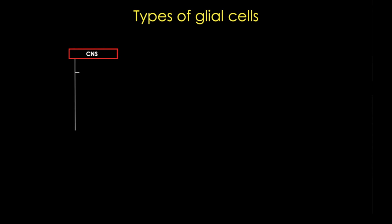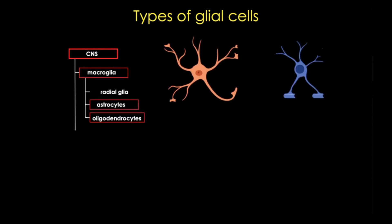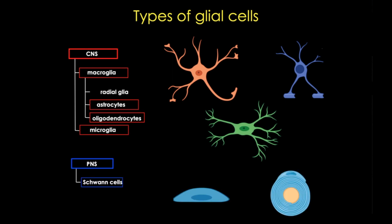Now in the mature CNS, there are two major macroglia, astrocytes and oligodendrocytes, and there are also microglia. In the PNS, the major glial type is the Schwann cell. And now we're going to dive a bit deeper and talk about a few glial cell types and some of their functions.